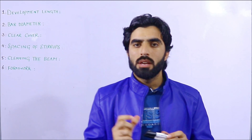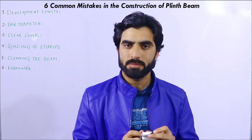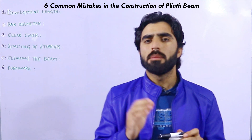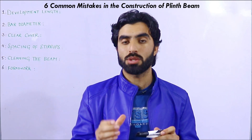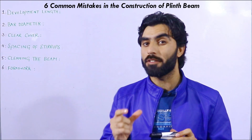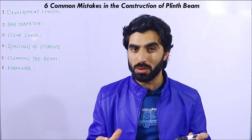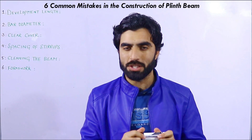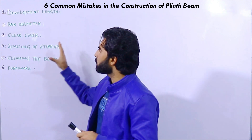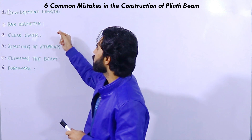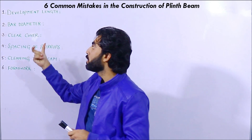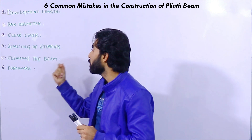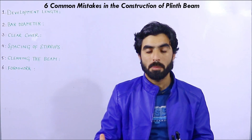Assalamualaikum beautiful people. Six common mistakes in the construction of plinth beam — before starting construction you should have knowledge about these six common mistakes, otherwise you will face problems. To avoid these mistakes, watch this video from start to end. The six headings are: development length, bar diameter, clear cover or concrete cover, spacing of stirrups, cleaning the beam, and formwork or shuttering.